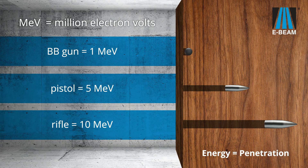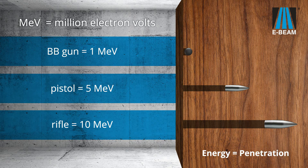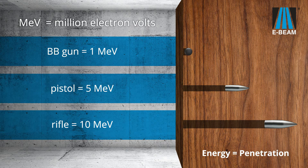Think of an electron as a bullet coming out of a gun, and an MEV as the speed of that bullet. The faster the speed, the deeper the bullet is able to penetrate its target. For illustrative purposes, the muzzle velocity of a BB gun is comparable to one MEV. As you can see, the projectile from a BB gun will not penetrate the target as deeply as something with a higher muzzle velocity, like a rifle.